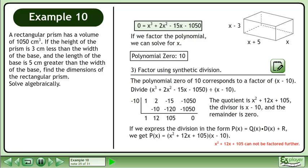If we express the division in the form P(x) equals Q(x) times D(x) plus R, we get P(x) equals x² plus 12x plus 105 times x-10. Note that x² plus 12x plus 105 cannot be factored further.